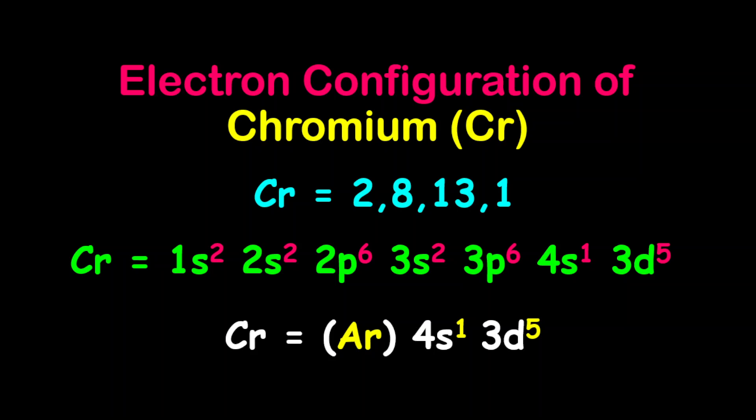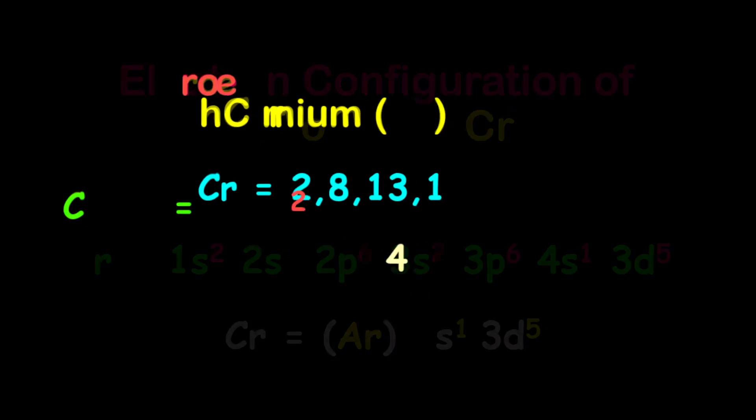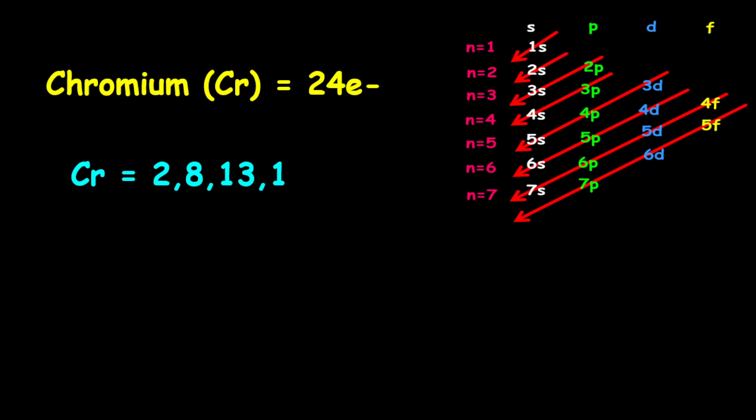The electron configuration of chromium. Chromium has 24 electrons. The electron configuration is given as 2, 8, 13, and 1.